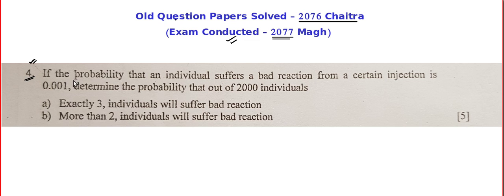So if the probability that an individual suffers a bad reaction from a certain injection is 0.001. After the COVID season, nowadays we have vaccinations and we always hear about these things — some people have allergic reactions, some people become very sick. So there is a bad reaction to a certain injection and the probability that it might happen is 0.001.